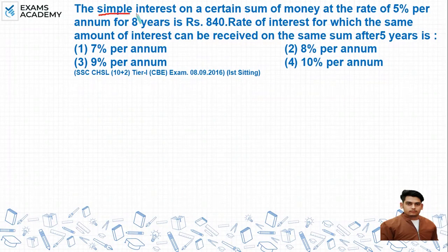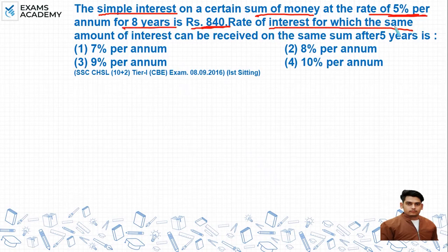The question is: the simple interest on a certain sum of money at the rate 5% per annum for 8 years is Rs. 840. The rate of interest for which the same amount of interest can be received on the same sum after 5 years is how much?